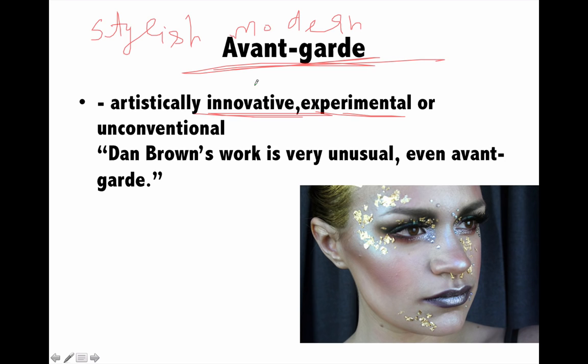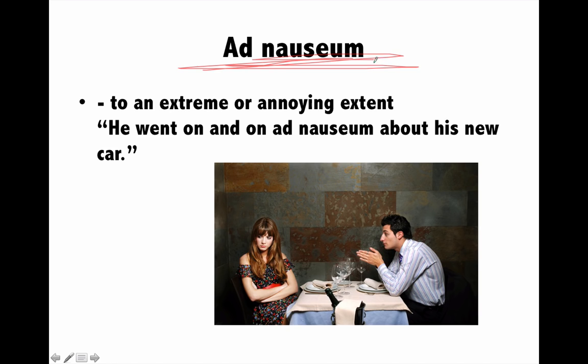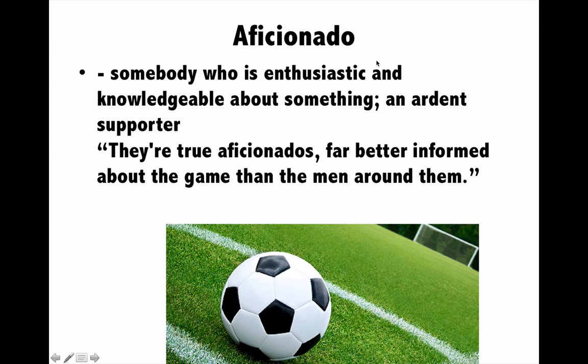Next is 'ad nauseam', which means when you annoy or irritate someone to a great extent. For example, if you are praising yourself to a friend for the last half hour, after a point it becomes very irritating. You were praising yourself ad nauseam — till the point of nausea where the other person feels like vomiting. It means to an extreme or annoying extent. For example, he went on and on ad nauseam about his new car.